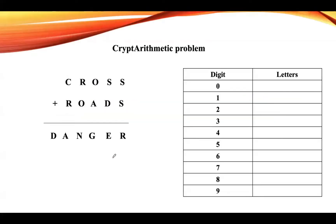In this lecture, let us take one more example. CROSS plus ROADS produces DANGER. The number of letters in CROSS and ROADS are both five, but the result DANGER has six letters, so we definitely need a carry. C plus R should produce a carry, which is assigned to D.